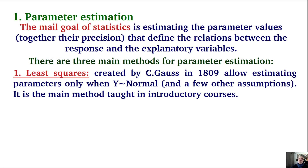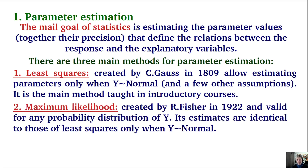Least squares, created by Gauss in the early 19th century, allows estimating parameters only when the response variable has a normal distribution, together with a few other simplifying assumptions, and is still the main method taught in many introductory statistics courses. The second is maximum likelihood, created by Ronald Fisher in 1922, valid for any probability distribution of the response variable Y. Its estimates are identical to those of least squares for the restricted case when Y follows a normal distribution.